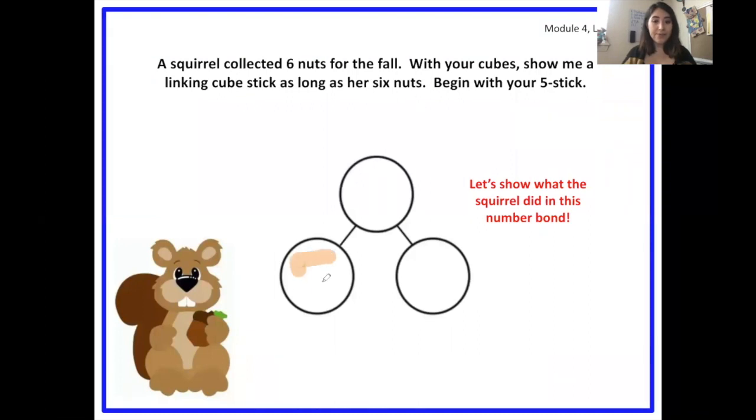So let's fill in our number bond with our parts and the whole. So how many parts did we start with? Five. And how many nuts did we add? One. Five and one make? Six. Awesome. Five and one make six. Say that. Five and one make six. Great job. Let's move on.